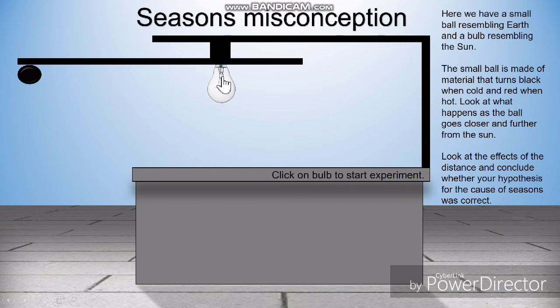I've designed this experiment to show them that cannot be true. This light bulb resembles the Sun, and this is one of those little balls that you put on pizza boxes that turns red if it's hot and black if it's cold.